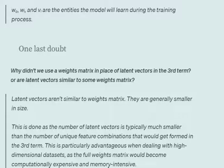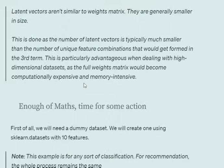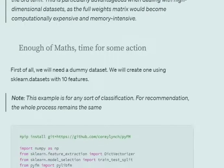Latent vectors are a kind of weight matrix but smaller in size. In the third term, with a large number of one-hot encoded columns, we calculate interactions between all possible pairs — for 10 columns, that's many permutations. Using a full weight matrix for this would become computationally and memory-wise very expensive. Instead, we use latent vectors — embeddings of a fixed, smaller size for each column — saving on both computation and memory. If you have a smaller number of columns after one-hot encoding, you could use weights directly.